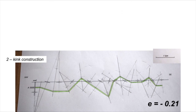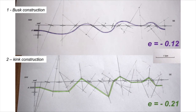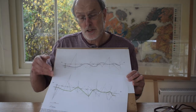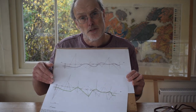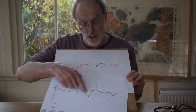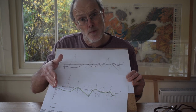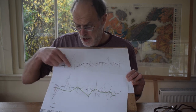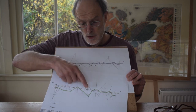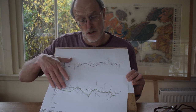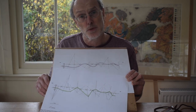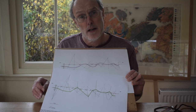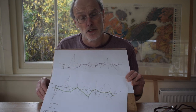So the kink construction gives e = −0.21 and the busk construction gives e = −0.12. Our different cross-sections imply different amounts of orogenic contraction and make different forecasts of subsurface structure. The choices we make when drawing cross-sections — in this case whether fold hinges are rounded or angular — impact not only the cross-section itself but also the deductions we draw from it. It's worth being aware of the implications of choices made in structural interpretations.